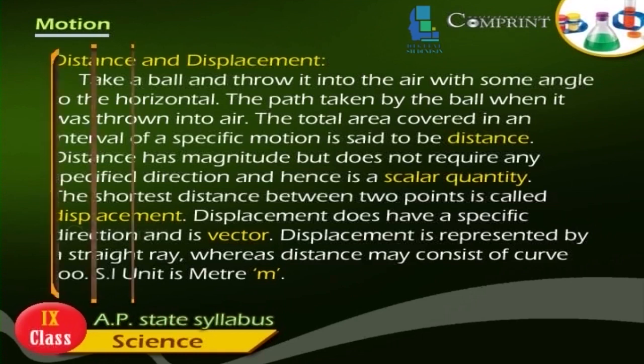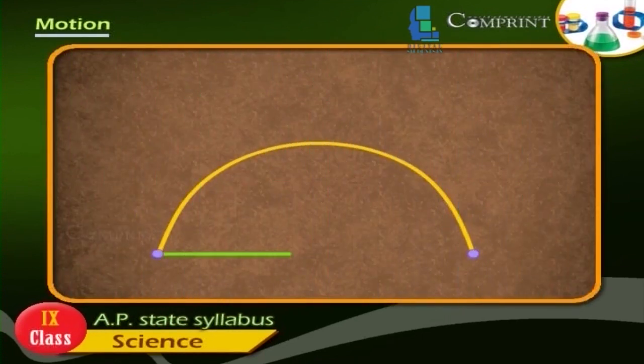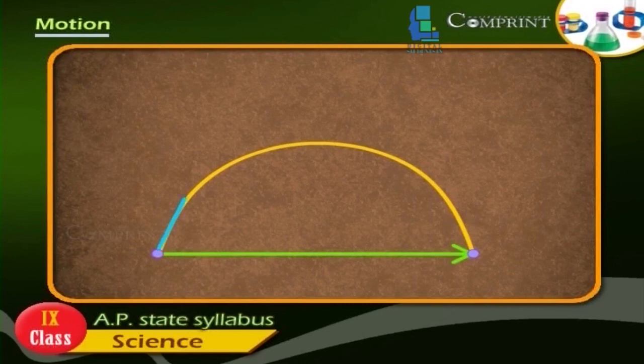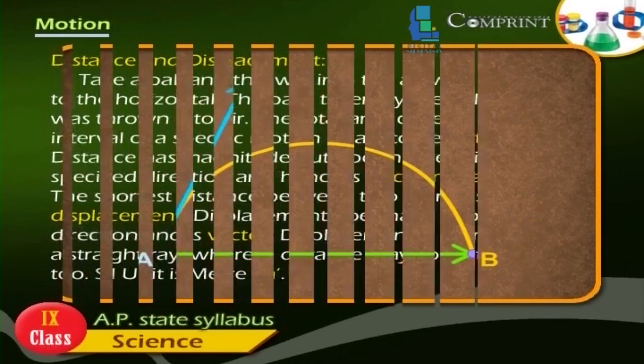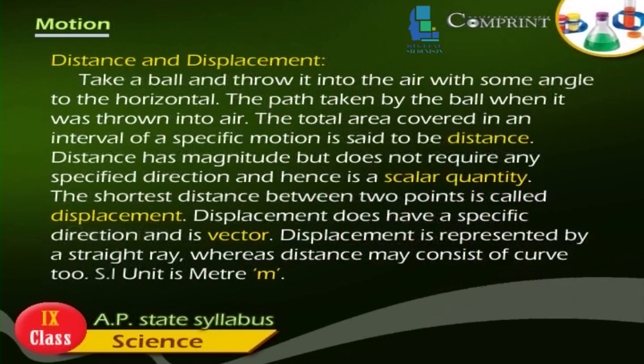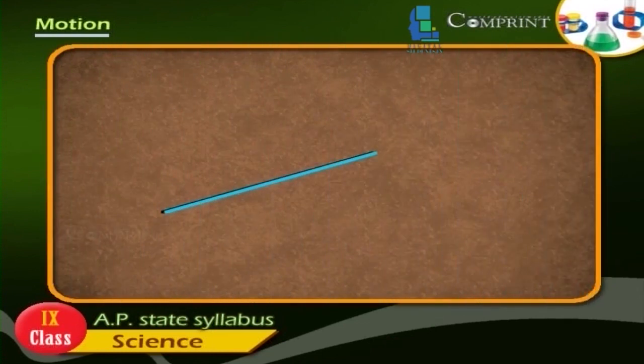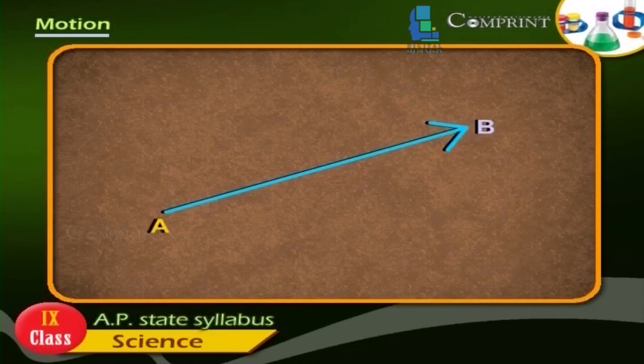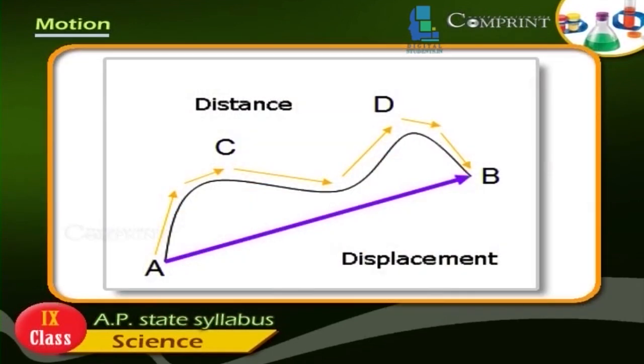The shortest distance between two points is called displacement. Displacement does have a specific direction and is a vector. Displacement is represented by a straight line whereas distance may consist of curves too.